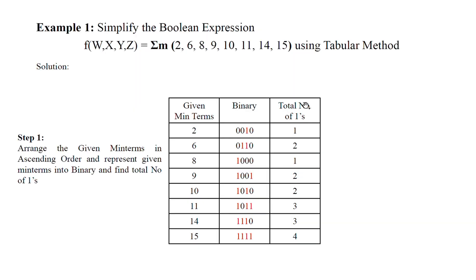Now look at the problem: simplify the Boolean expression f(w, x, y, z) = Σm(2, 6, 8, 9, 10, 11, 14, 15) using the tabulation method. This is a 4-input variable function. Step 1 is to arrange the minterms in ascending order and write their corresponding binary values. Then find the total number of 1s in each binary representation: minterm 2 has one 1, minterm 6 has two 1s, minterm 8 has one 1, minterms 9 and 10 have two 1s, minterms 11 and 14 have three 1s, and minterm 15 has four 1s.